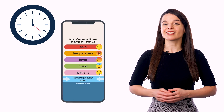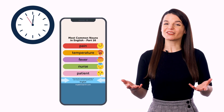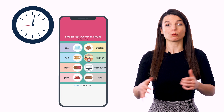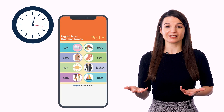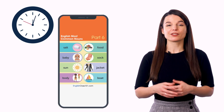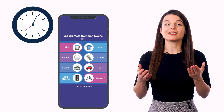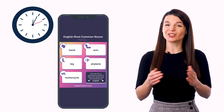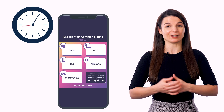Second, decide when you'll learn. Most of us pull out our phones to waste time and swipe around while we're on the bus or train, while waiting for someone, or while on the couch. Think about when you're most likely to do this and designate that as learning time, so your brain automatically knows when to learn.